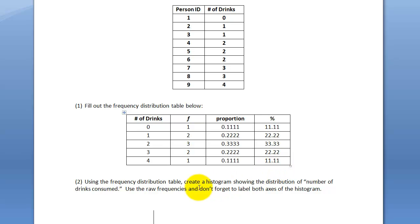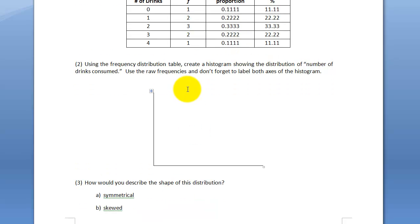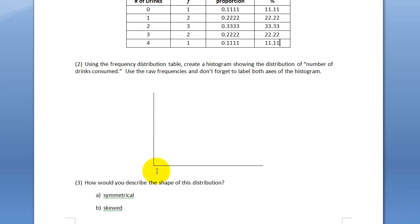Number two: using the distribution table, create a histogram showing the distribution of number of drinks consumed. Use the raw frequencies and don't forget to label both axes. So the frequency distribution table for the number of drinks consumed — number of drinks consumed on one axis and the actual frequency value on the other. Zero goes here on the x-axis.